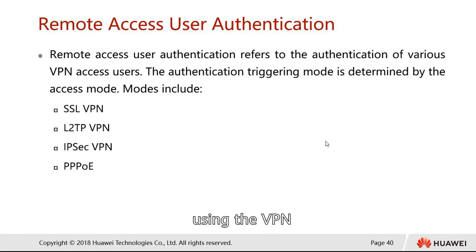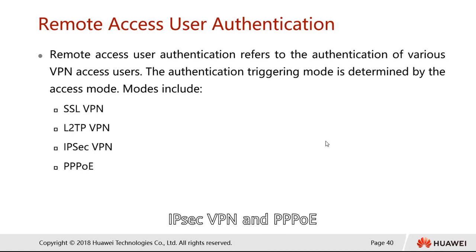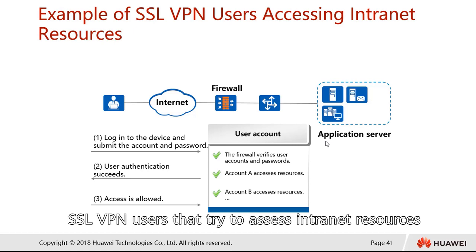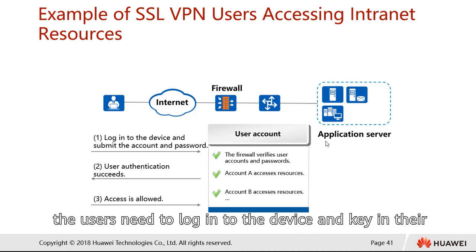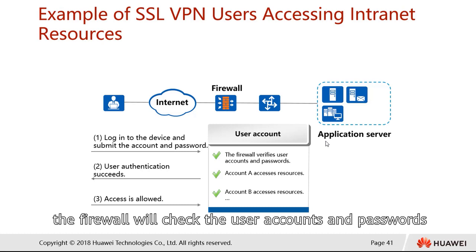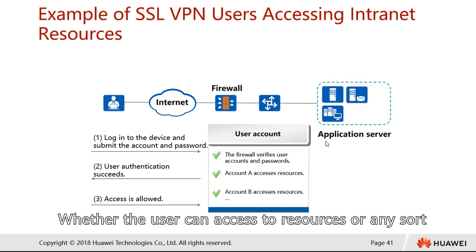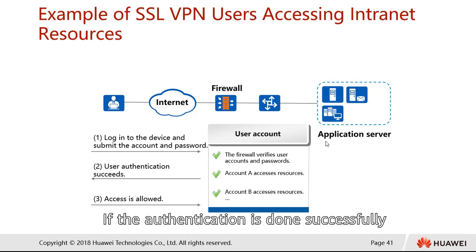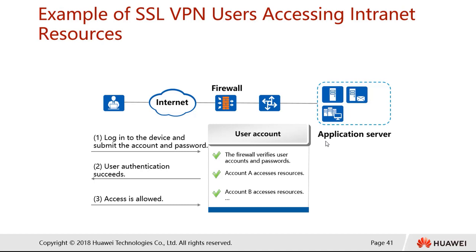For remote access user authentication using VPN — SSL VPN, L2TP VPN, IPSec VPN, and PPPoE — in the SSL VPN example, the user logs into the device and enters their account and password. When they send this information to the firewall, the firewall checks the account and password. Permissions are granted based on the authentication result. If authentication is successful, the user can access the intranet resources.